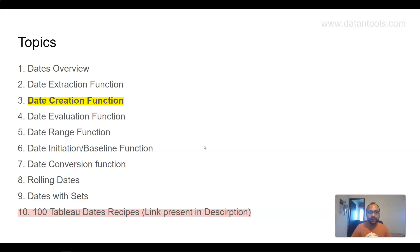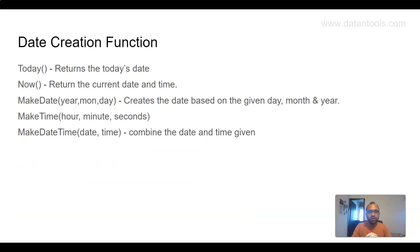Let's go ahead and see the topics. We have five different functions: TODAY, which returns today's date; NOW, which returns the current date and time; MAKEDATE, where you specify the year, month, and day to create a date; MAKETIME, where you supply the hour, minute, and second to create a timestamp; and finally MAKEDATETIME, which combines a date and a time from two different columns.